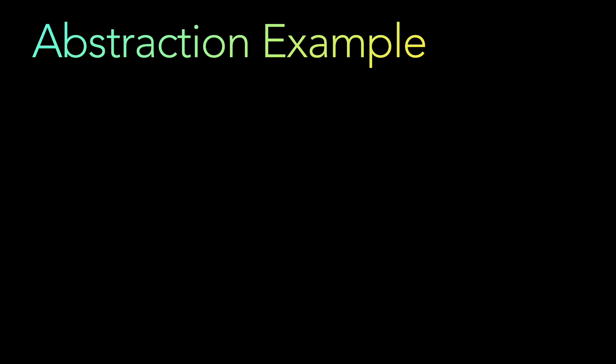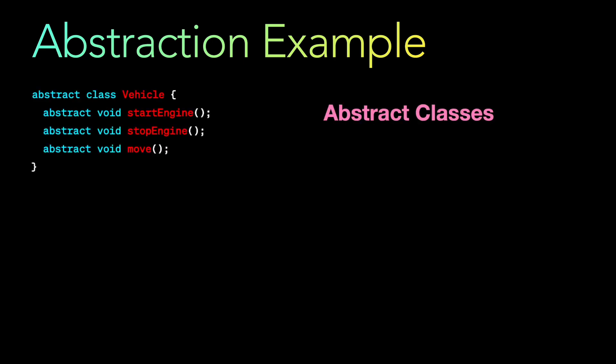Let's take a look at an example, starting with what an abstract class looks like. We are taking an abstract class called Vehicle, and we have defined three abstract methods: start engine, stop engine, and move. In the abstract class, there is no implementation inside these methods — they are only definitions.